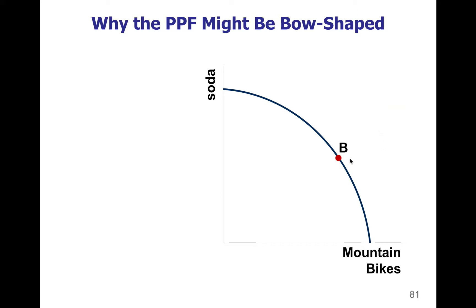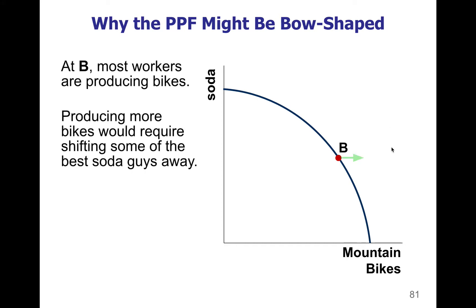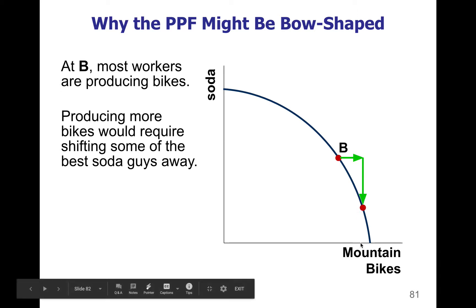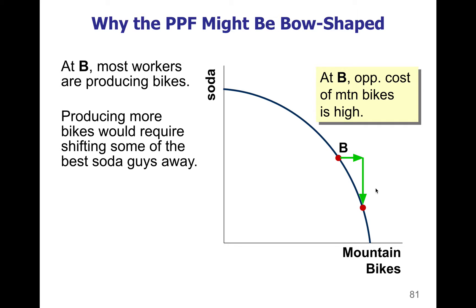Now let's say we're producing at point B. At this point, we're making a lot of mountain bikes and less soda than before. If we want to continue making even more mountain bikes, we're now in the steep part of the curve. Moving to the next point nets us a small amount of additional mountain bikes, but now we're pulling the very best soda workers. To shift them over to mountain bikes means we're giving up a lot of soda — a high opportunity cost. As you get into the steeper portion of the curve, your opportunity cost to make mountain bikes is rising.